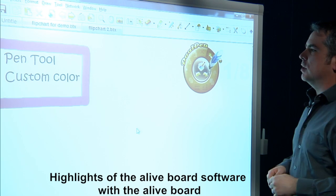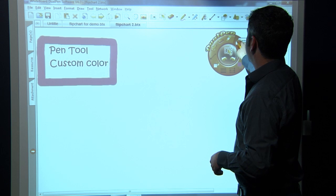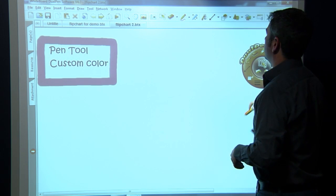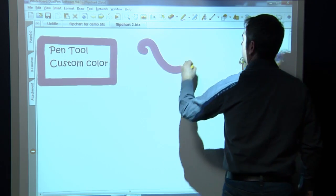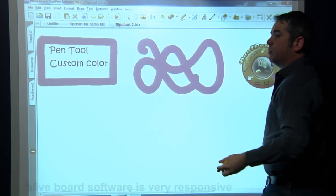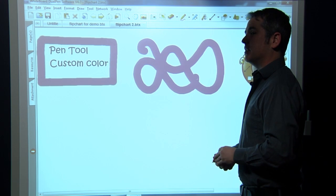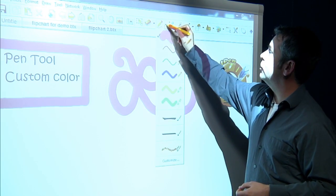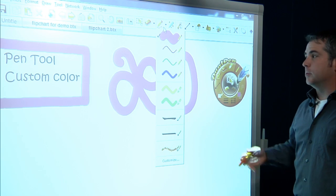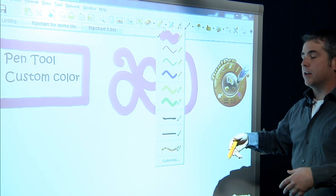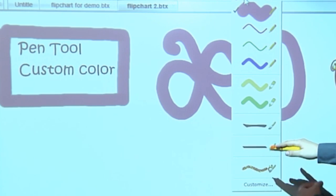We want to talk first about the pen tool, and we're going to access the pen tool at the top. You can also access it on the side from your control panel. I'm going to move this over so I can access better. Now, I've got my pen tool selected, so I'm just going to draw on it. The Alive board is very responsive, and in addition to being very responsive, it gives you an extreme amount of control.